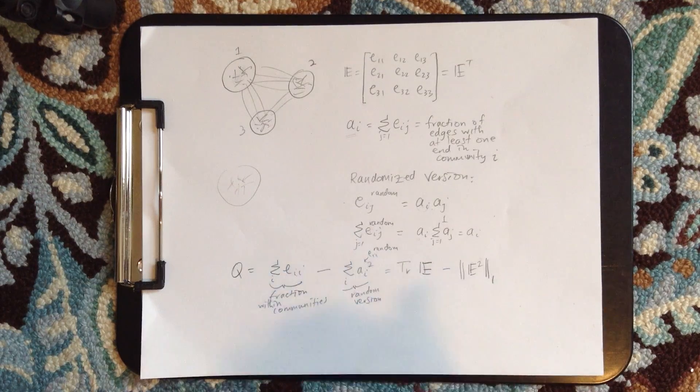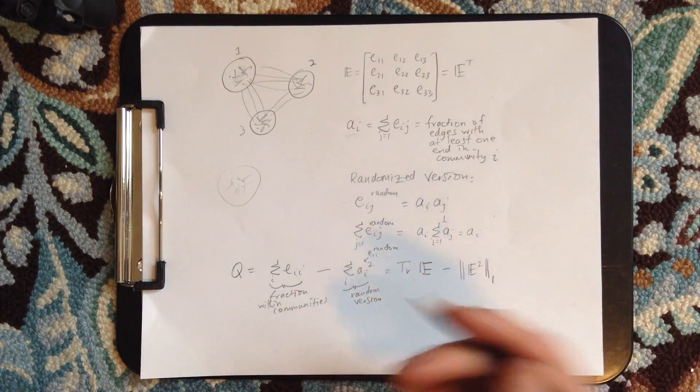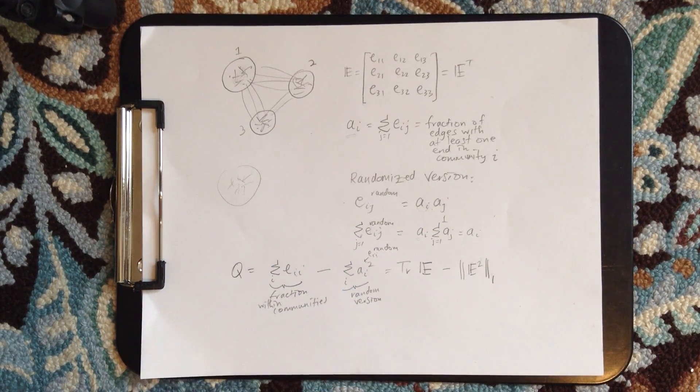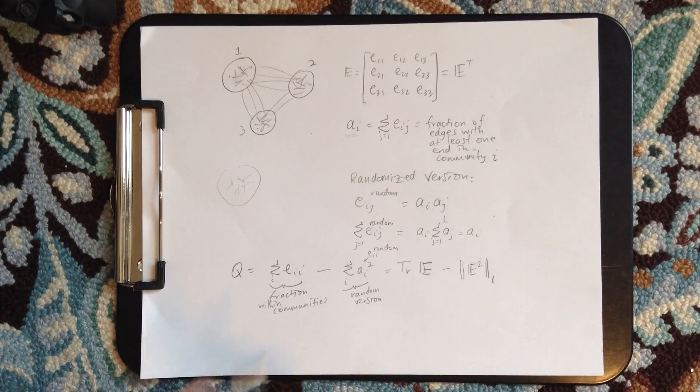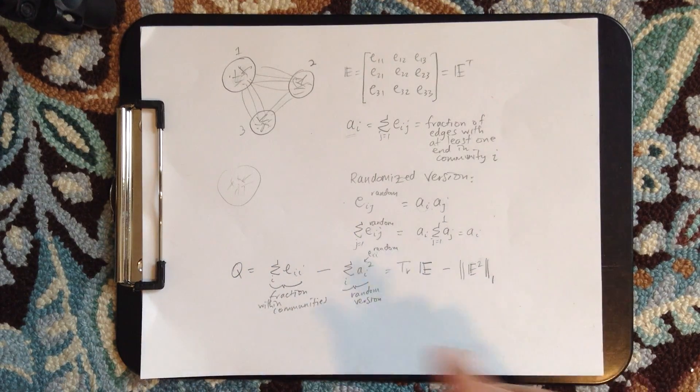So we subtract that off, and so if this is, you know, and then we can play around with this. So if it's zero, of course, then we haven't done a very good job because we're at the same level as a purely random version. But we want to see this thing to be positive. So we'll have that later on.